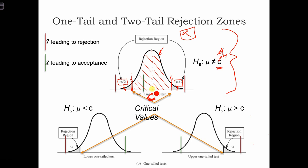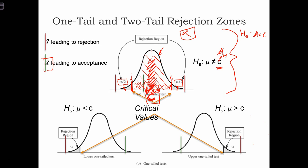Suppose the null hypothesis is true — if mu equals c — then when we go out and collect a sample mean x-bar, it is more likely that the x-bar will be something similar to c, somewhere in the middle of the distribution. So long as the x-bar we collect is within this range, from one critical value to the other, we are going to say it is quite likely that the null hypothesis is true, and we will not reject it.